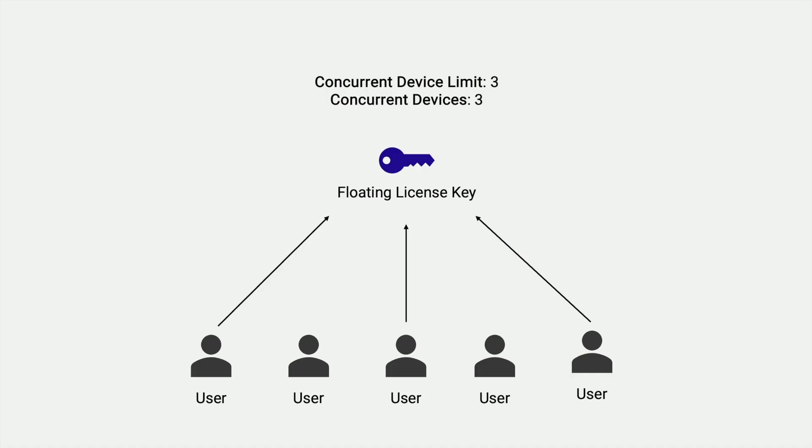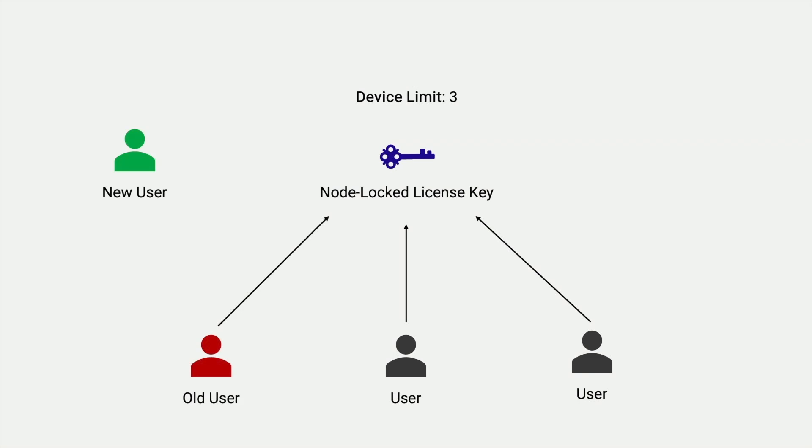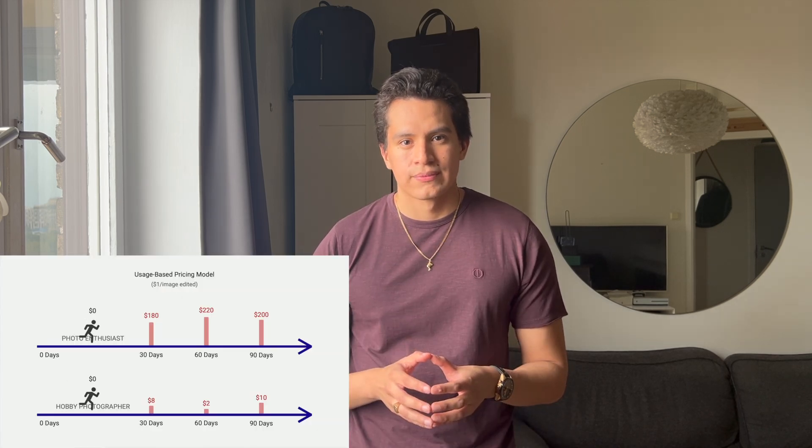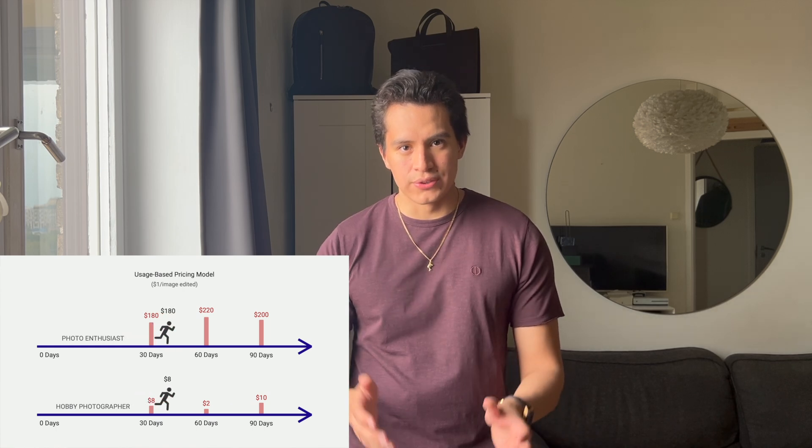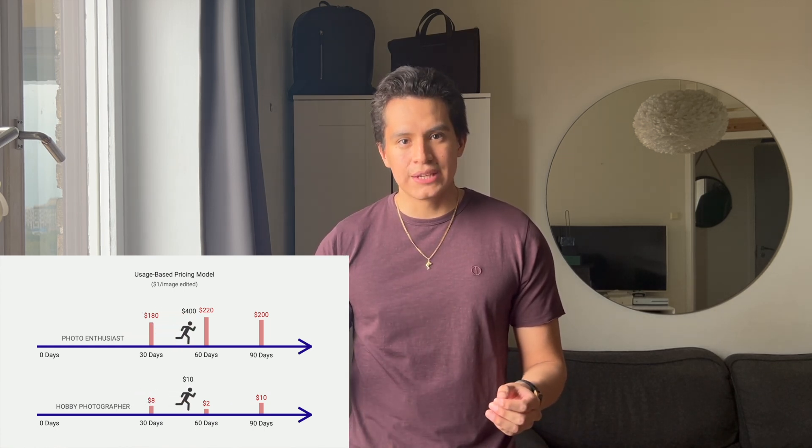But if you're selling business to business, you might instead benefit from other licensing models, such as a floating or node-locked licensing model to allow for multiple seats. You might even require licensing to work in an offline setting. The more advanced licensing models can come at an extra price with some providers, so it's always good to check that your provider is able to accommodate your chosen licensing model. If you are unsure about what licensing model you want to implement, I have linked a video in the description where I tell you more about licensing models.